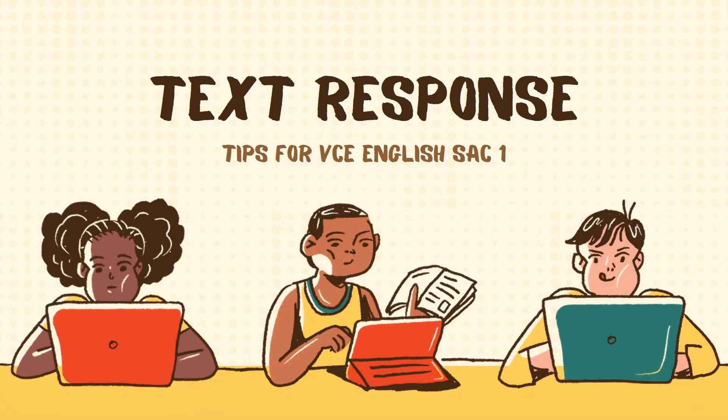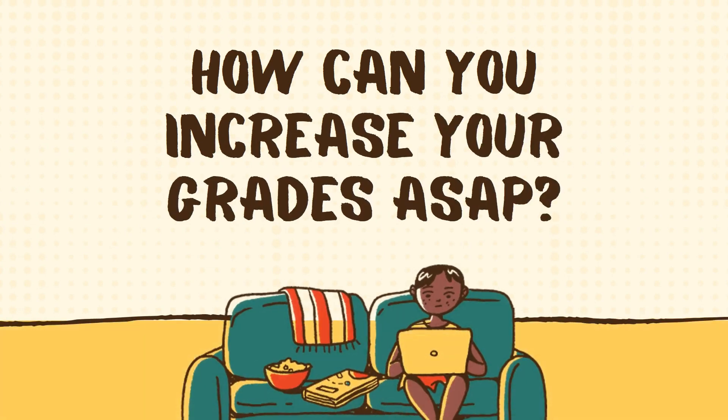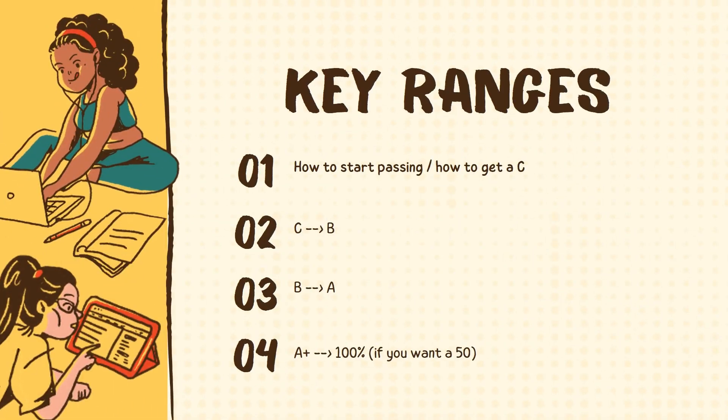The first text response SAC is just around the corner, so let's go through the top things you can do to jump your grades up a band. We'll start with how to pass, or how to get to C level, then how to get from C's to B's, how to get from B's to A's, and finally what you should be looking for if you want to get 100% and ultimately a 45 plus score at the end of the year.